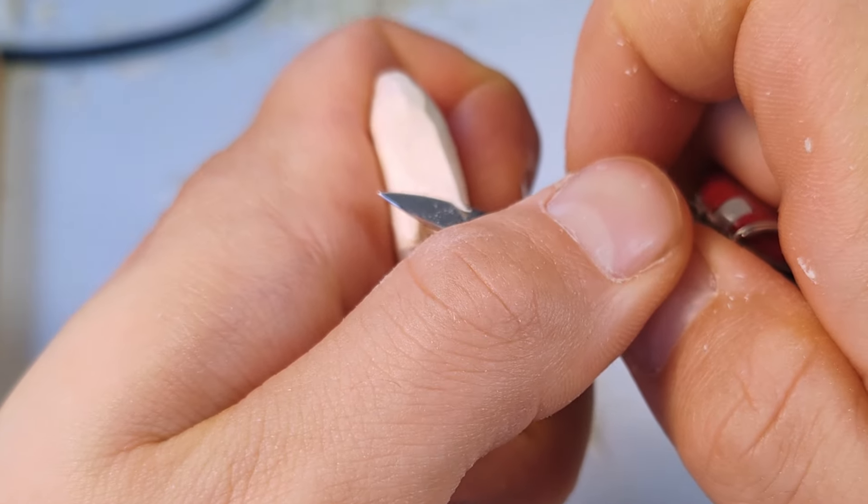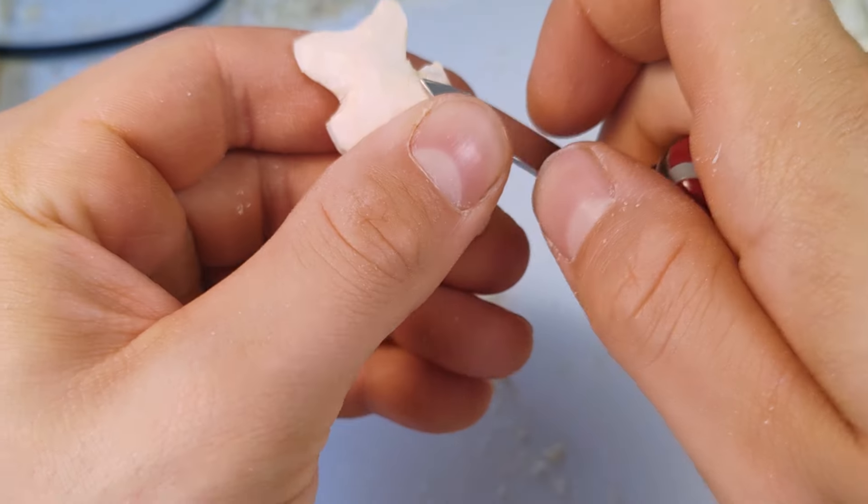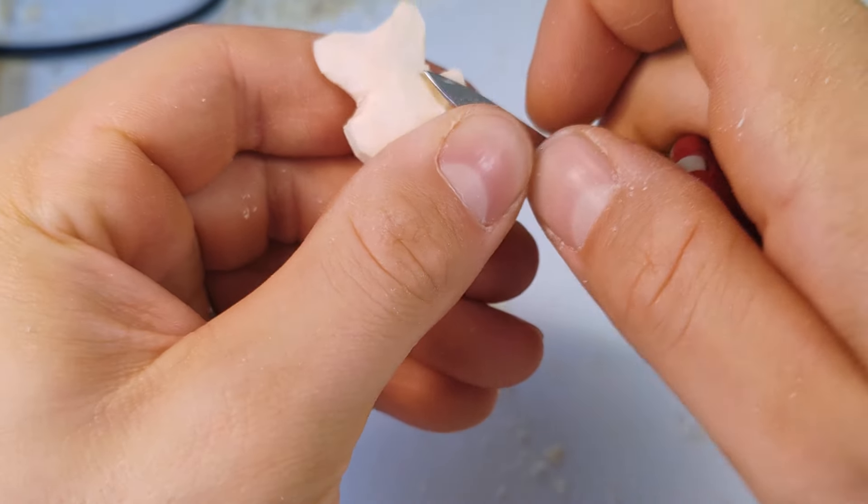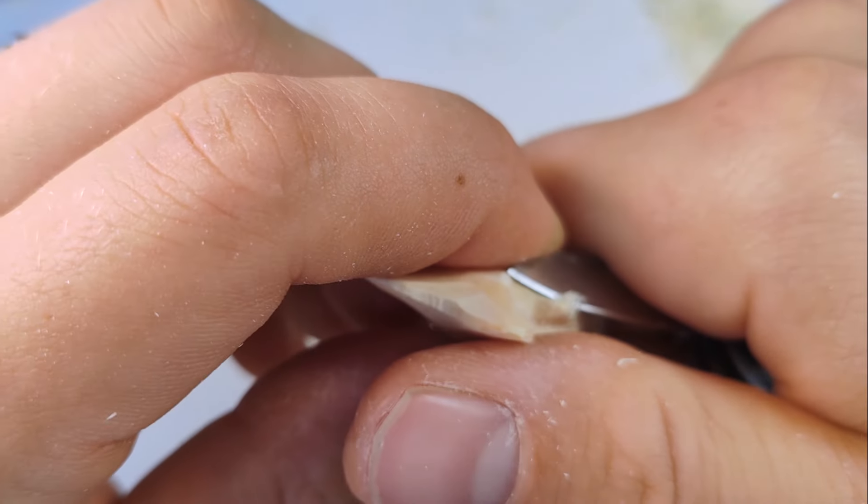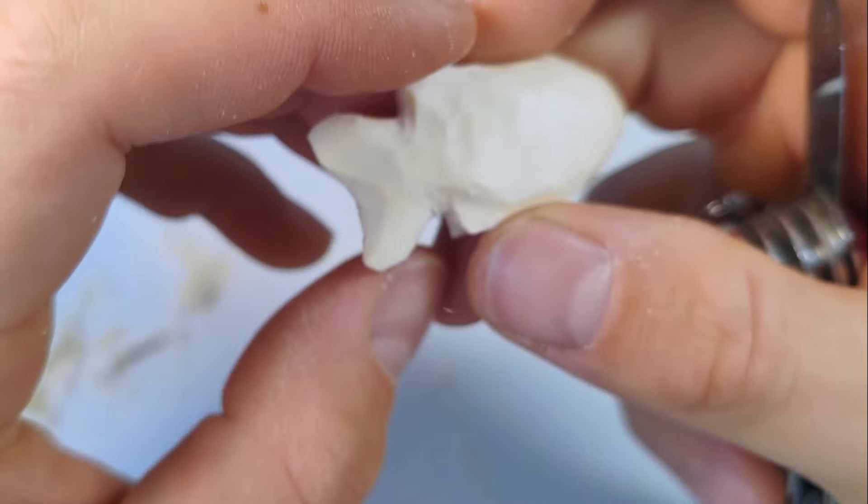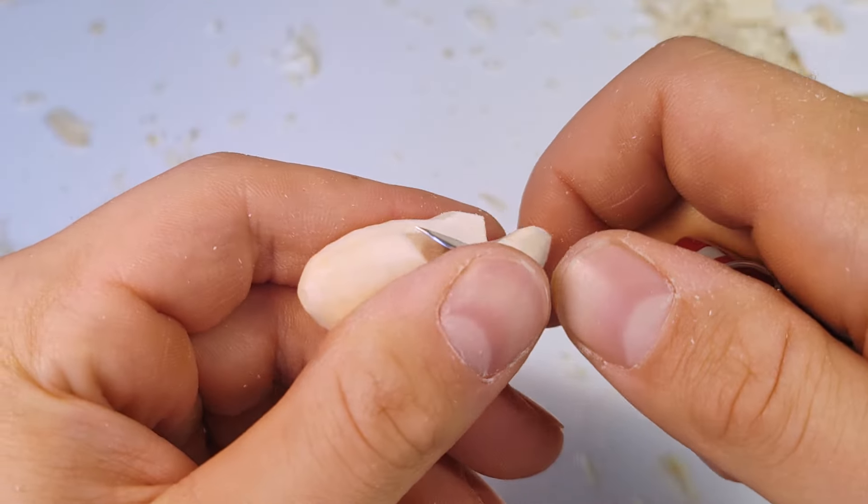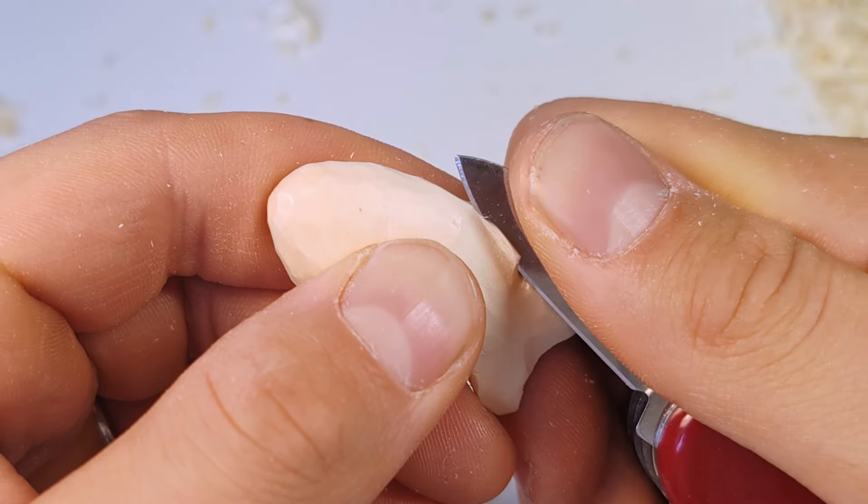The fins also need to be slimmed down from the outside. A few sweeping cuts work here too. The dorsal fin, so the fin on the back, can be slimmed down like this.